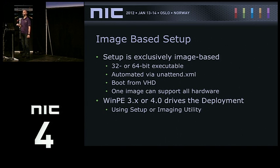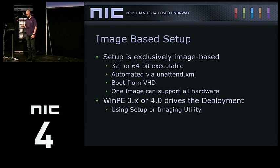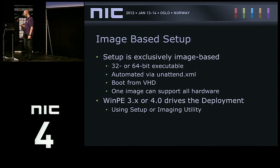In Windows 8 we have Windows To Go. You can do something similar with Windows 7 currently, it's just not supported. Windows To Go means you take that VHD file, but instead of copying it to a machine's hard drive, you copy it to a USB stick. You then have an entire Windows 8 setup — your image, your machine — on that USB stick, and you can take it to any hardware available and boot from it.